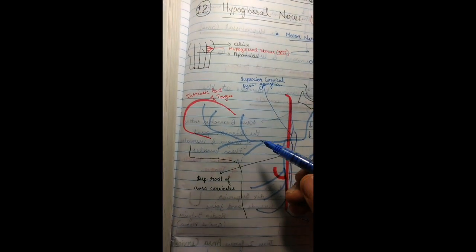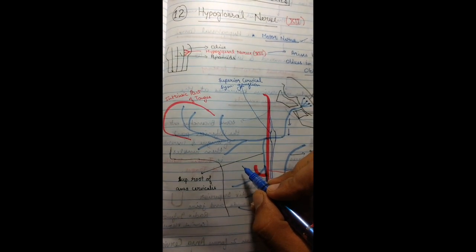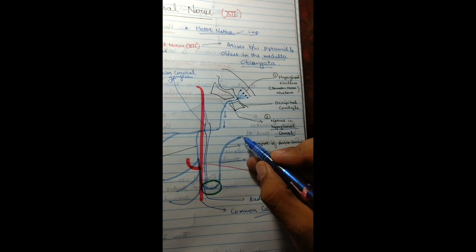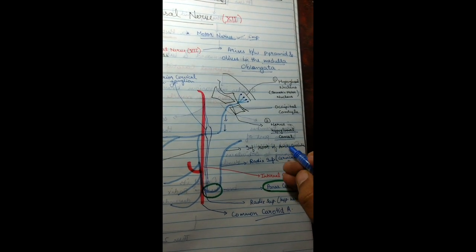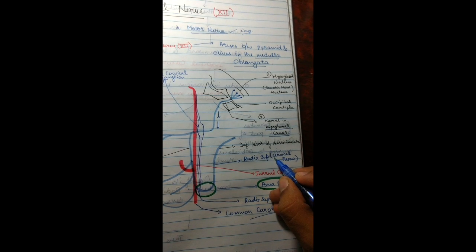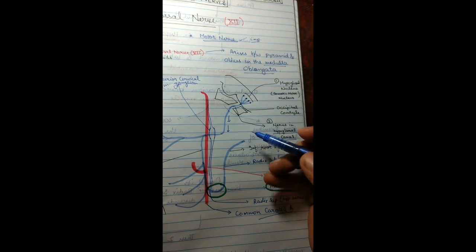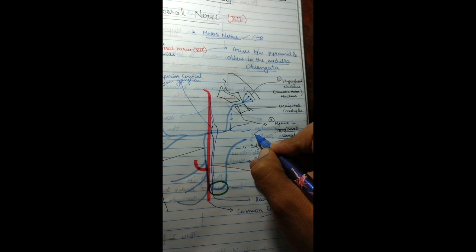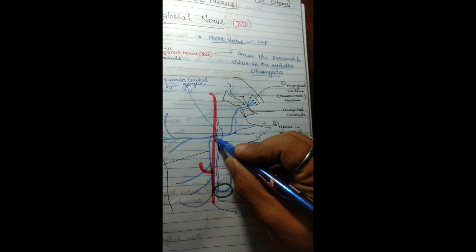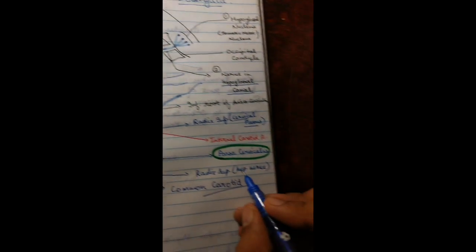The nerve then goes to the intrinsic part of the tongue — the back intrinsic part — giving branches there. It also gives branches in the hyoid region. One important point: the hypoglossal nerve gives the radix superior, which is the superior root of the ansa cervicalis. The ansa cervicalis is a structure formed by both the radix inferior and the radix superior.